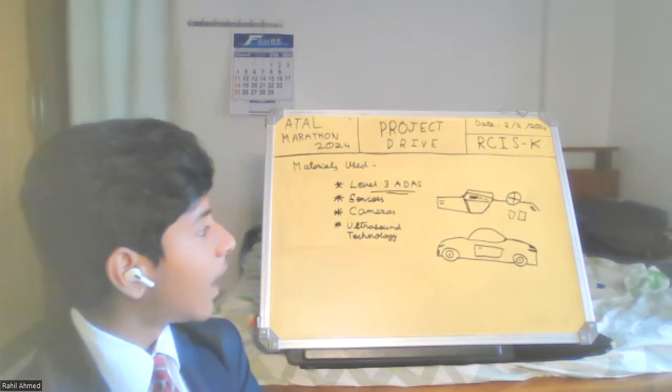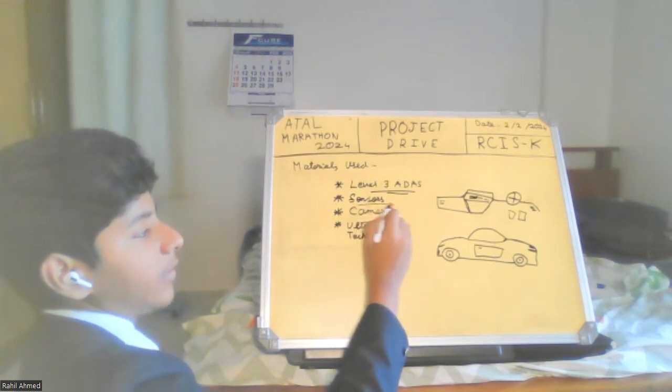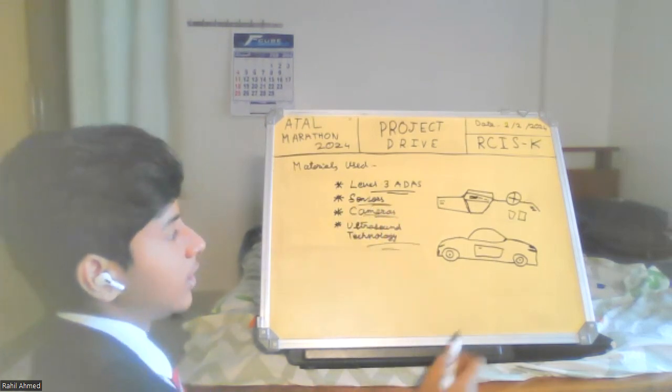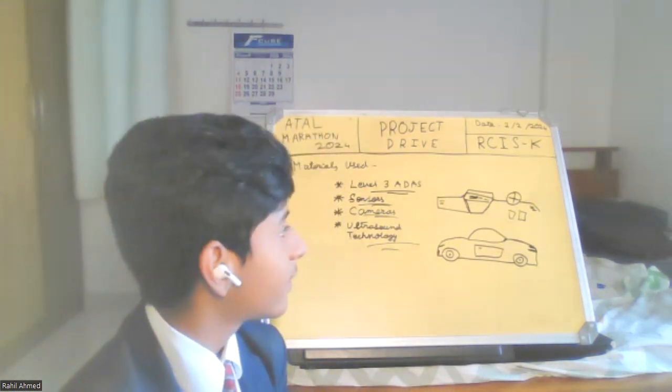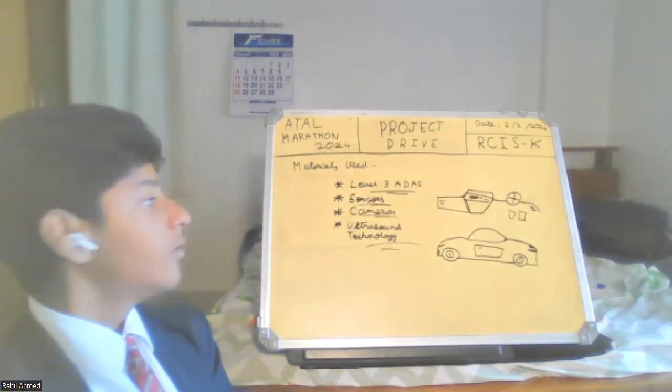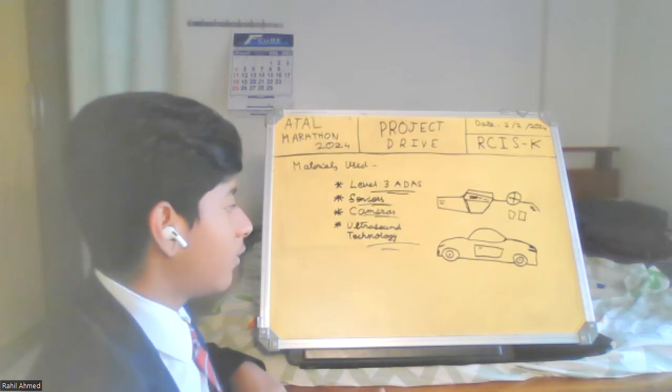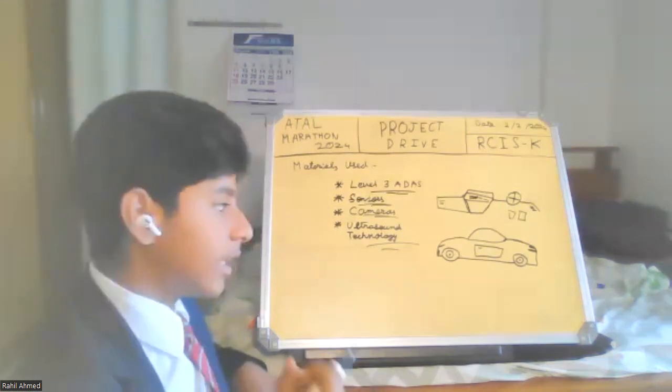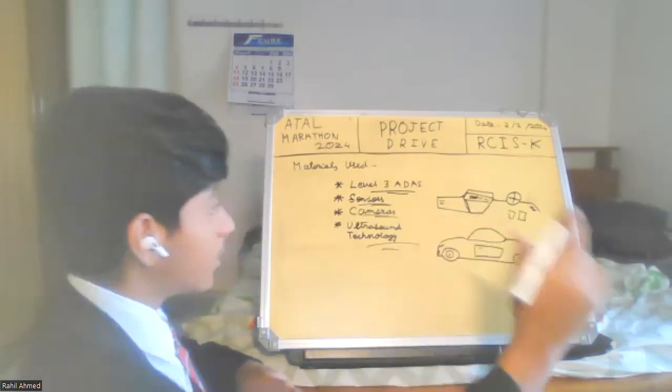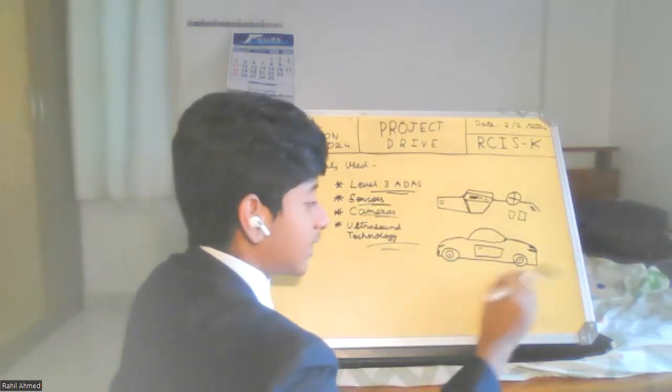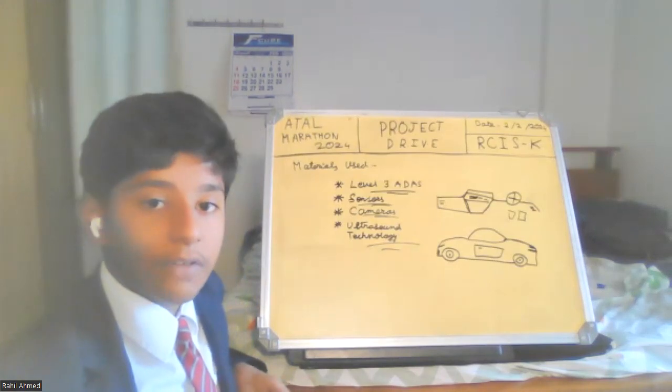Now I will be explaining about our materials which we are using. The first one is level 3 ADAS, second is the sensors, the cameras, the ultrasound technology. The full form of ADAS is automatic driving assistance system. Let's start from level 0 to level 3. Under ADAS, there are 6 levels: level 0, level 1, level 2, level 3, level 4, and level 5. Under our system, we are using level 3 ADAS.